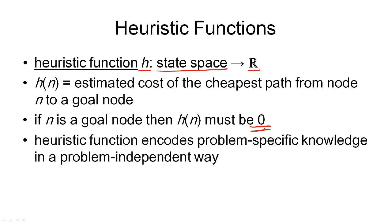For each problem we are looking at, we can define a different heuristic function, which is why the heuristic function is problem-specific. But whatever search space or problem we're looking at, the heuristic function will always give us a numeric value for each state — that fact is problem-independent. A perfect heuristic function would always give us the correct distance to the nearest goal node, but if we had such a function the search would be trivial. Unfortunately, perfect heuristic functions are very hard to find for most problems.